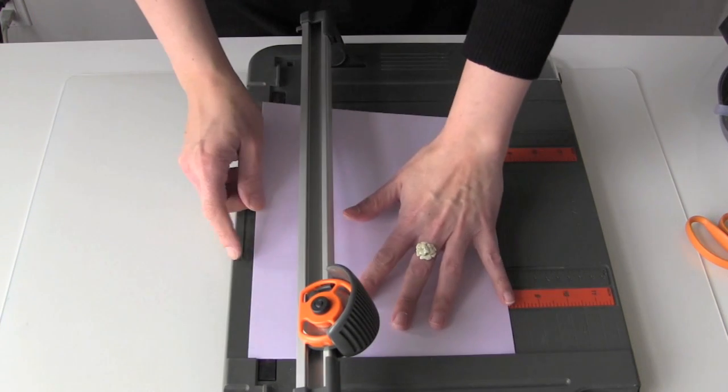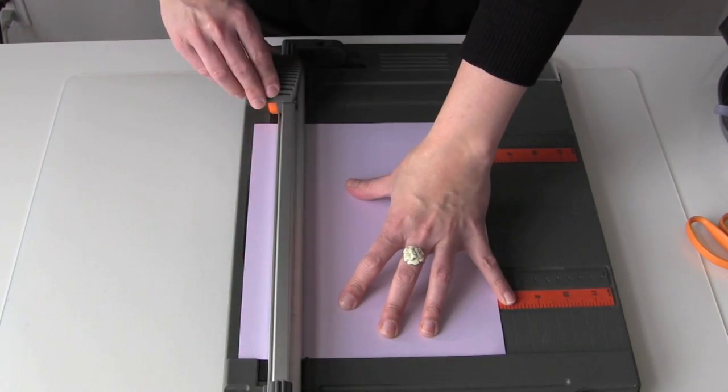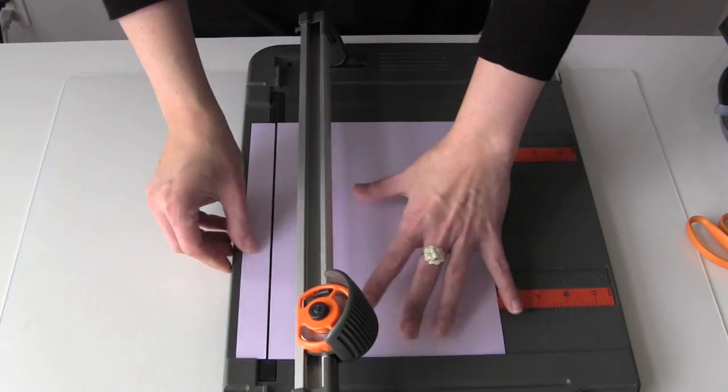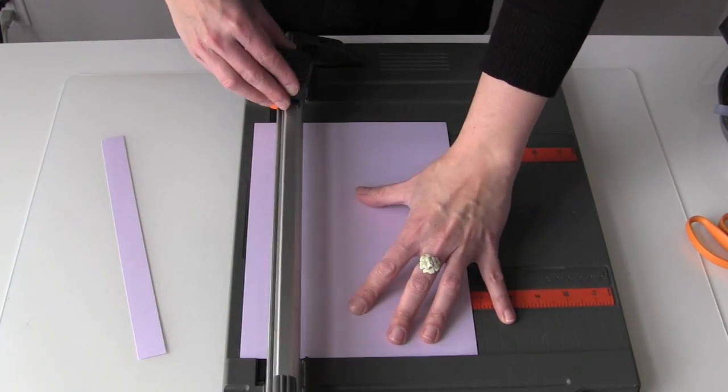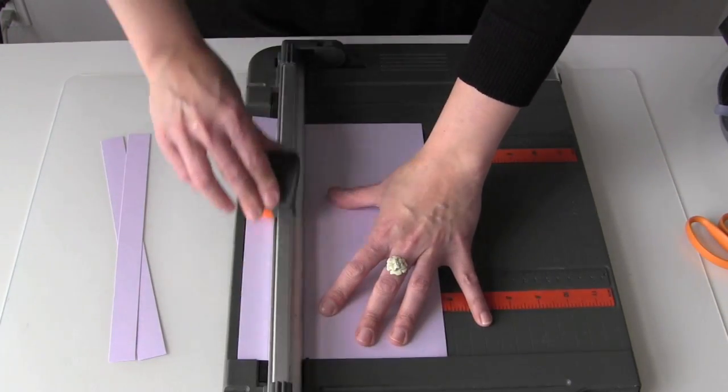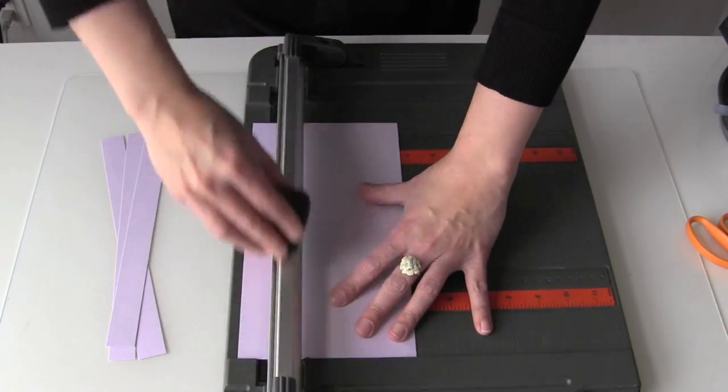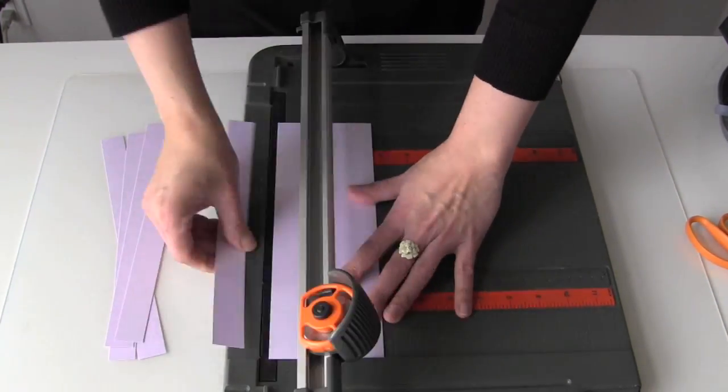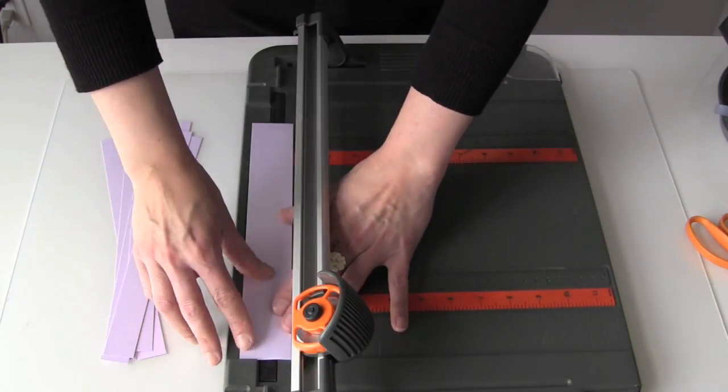You're going to cut the paper into strips, I do them about one inch wide. So you're going to need a few of these. And when you're done, you're going to want to save one piece because this is what we're going to glue all the shapes onto. And if you don't have a paper cutter, you can just use scissors.